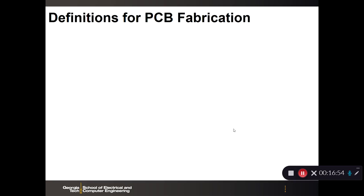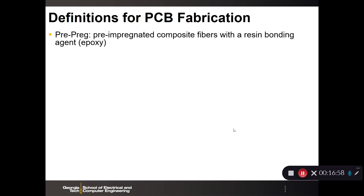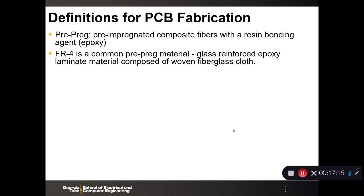In summary, the definitions for PCB fabrication: prepreg is the pre-impregnated composite fibers with a resin bonding agent — essentially epoxy — used to laminate copper foils to the core. FR4 is a common prepreg material. For very high-speed circuits requiring significant signal integrity, FR4 may not be the prepreg material of choice, but for most applications FR4 is ubiquitously used. FR4 is the glass-reinforced epoxy laminate material made of woven fiberglass cloth used to laminate additional copper foils to the core.